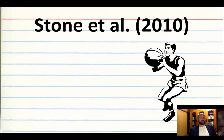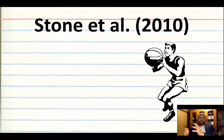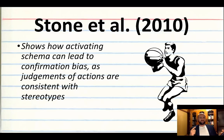Another study looking at confirmation bias and stereotypes was Stone et al. Participants listened to a basketball game — half were shown a picture of a Black athlete and told this was the player, the other half were shown a picture of a White athlete. The study played on the stereotype that Black athletes are more athletic while White athletes have higher basketball IQ. Results showed those who thought they heard a White player judged him as showing more hustle and making smarter plays, while the Black athlete was judged as more athletic — activating the schema led to confirmation bias.